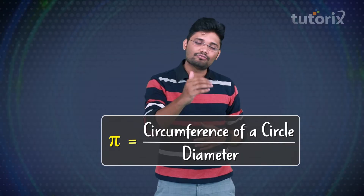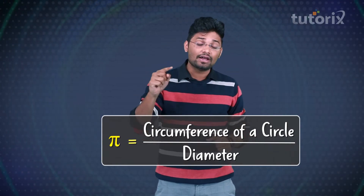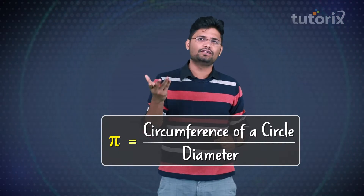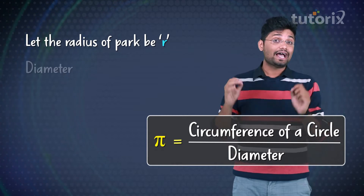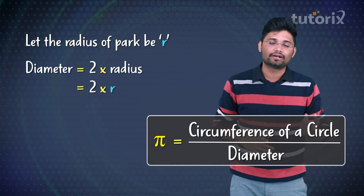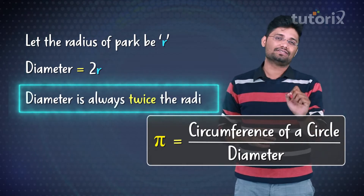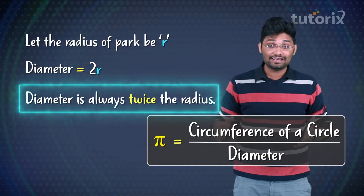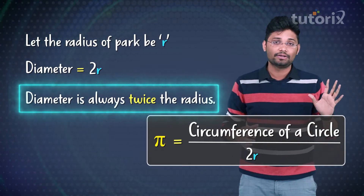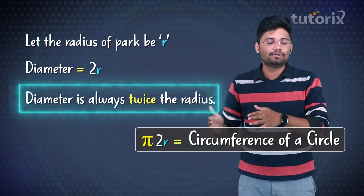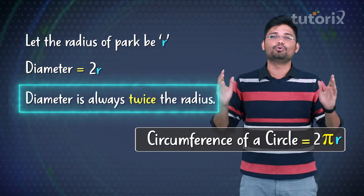So Pi is equal to circumference by diameter. Now to find the circumference of the park, we need to know the diameter or the radius of that park. Let us say that the radius of the park is r. Its diameter will be 2r, because diameter is always twice the radius. So Pi is equal to circumference by 2r. Now on rearranging these terms, circumference will be 2πr. This means the circumference of a circle is 2πr.